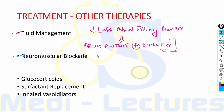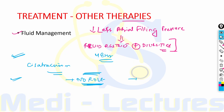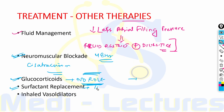Early neuromuscular blockade for the first 48 hours with drugs like cisatracurium has been found helpful, increasing survival and ventilator-free days in ARDS. There is no established role for glucocorticoids in managing ARDS, though in COVID-19 pneumonia, glucocorticoids are regularly used. There is no role for surfactant replacement. Inhaled pulmonary vasodilators like nitric oxide and epoprostenol sodium can transiently increase oxygenation.